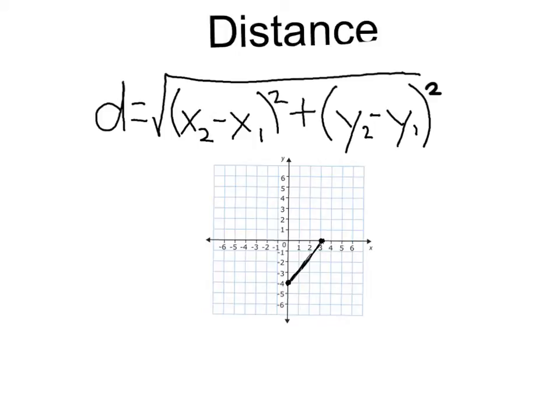So first, let's identify what those endpoints are. Right here, we've got 0, negative 4, and our second point is going to be 3, comma, 0.